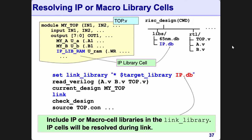That is why the IP library is only specified in the link_library path — we do not specify it in the target_library. The target_library, 99.9999% of the time, will only contain the standard cell library — the logic gates — because the target_library is used by the compile command only. No other command in DC makes use of the target_library. So: target_library is for standard cells, link_library contains all libraries you're using. The target_library is a subset of the link_library.